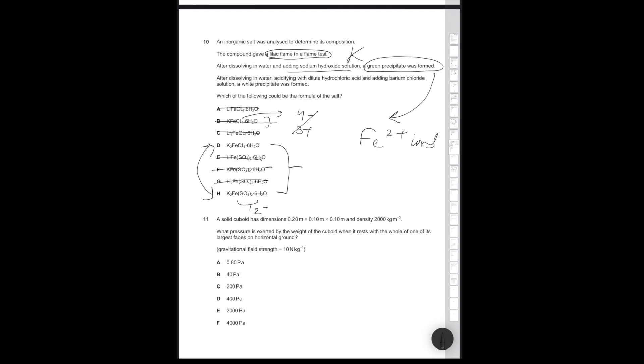After dissolving in water, acidifying with dilute hydrochloric acid and adding barium chloride solution, a white precipitate was formed. The fact that we can acidify it with dilute hydrochloric acid and that we get a potassium chloride salt forming tells us that it must be a sulfate salt. Because why would we be trying to form a chloride salt if we already had a chloride salt? Therefore, the correct option is answer H. This type of question is simply factual recall mixed in with a little bit of problem solving.